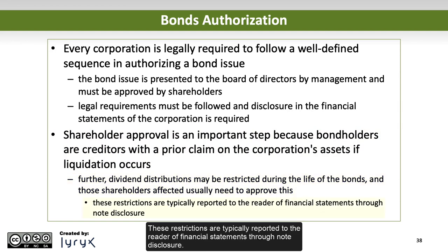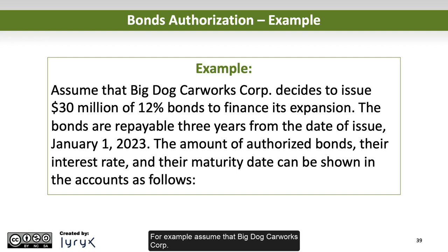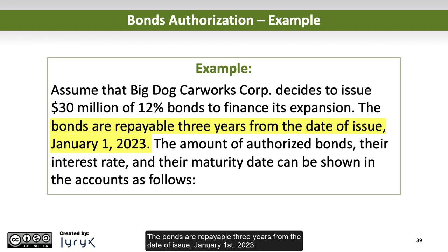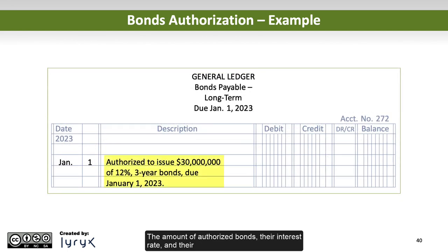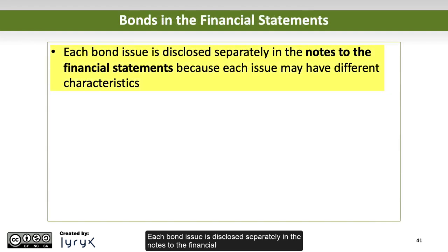These restrictions are typically reported to the reader of financial statements through note disclosure. For example, assume that Big Dog Carwex Corporation decides to issue $30 million of 12% bonds to finance its expansion. The bonds are repayable three years from the date of issue, January 1, 2023. The amount of authorized bonds, their interest rate, and their maturity date can be shown in the accounts. Each bond issue is disclosed separately in the notes to the financial statements because each issue may have different characteristics.